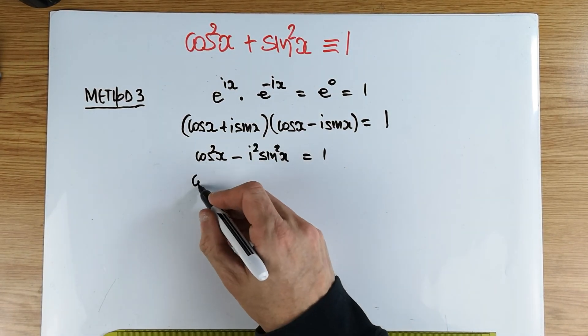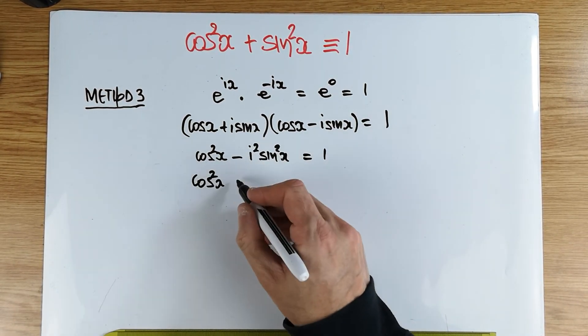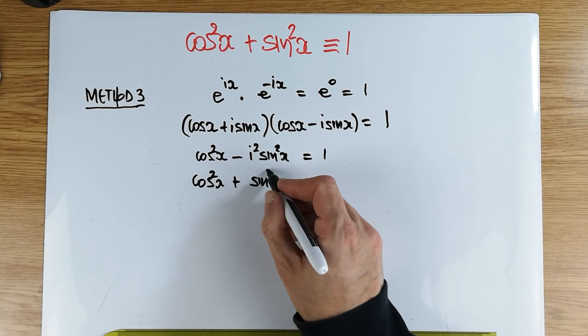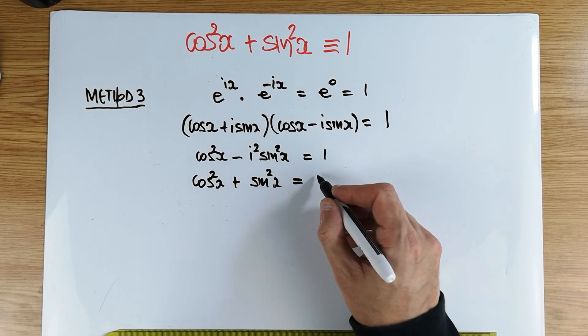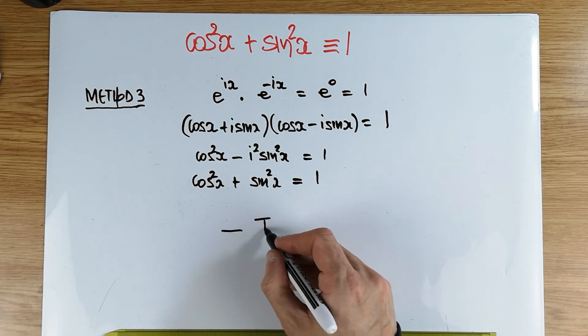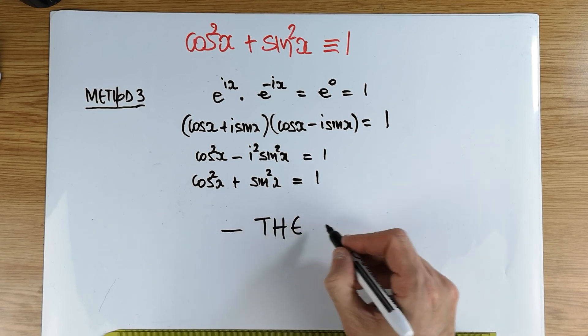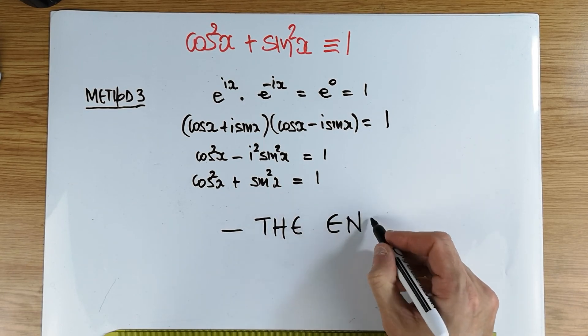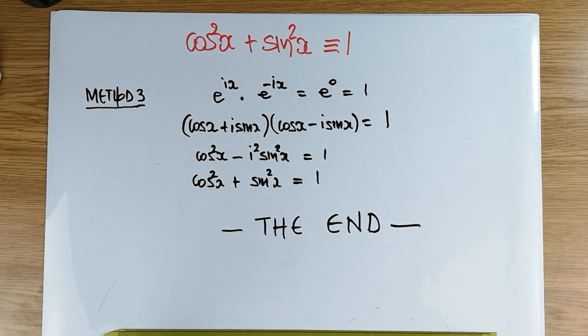And, of course, the i squared on the next line will switch the minus into a plus. And the result follows. That is quite efficient, isn't it? I hope you learned. I hope you enjoyed this particular lecture. I will see you very soon. Bye for now. Signing out.